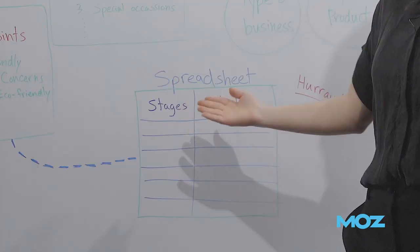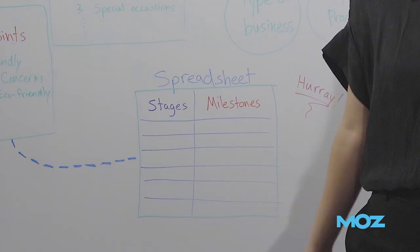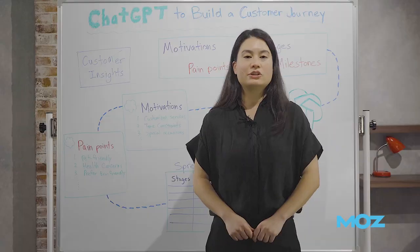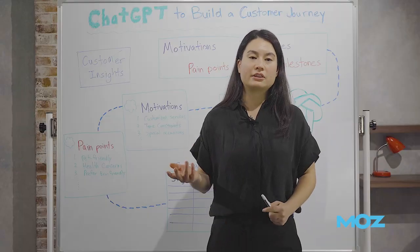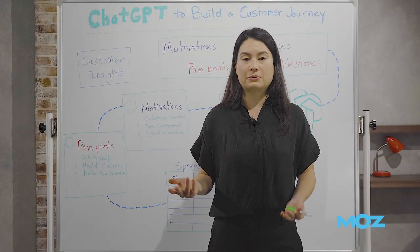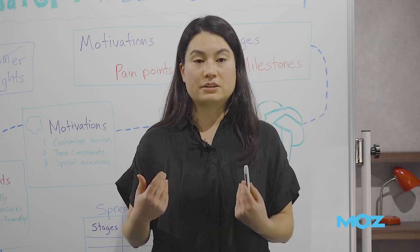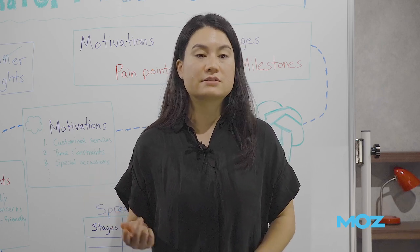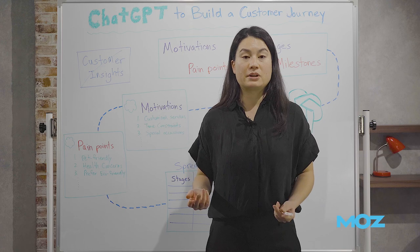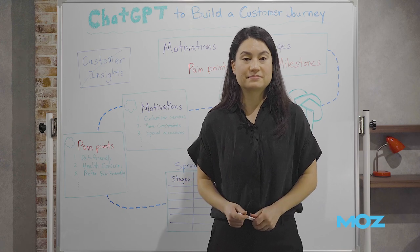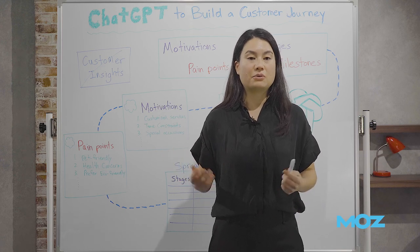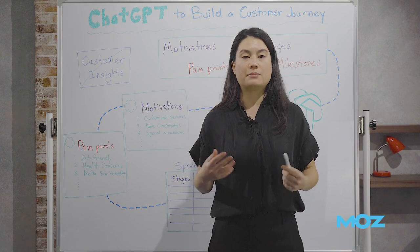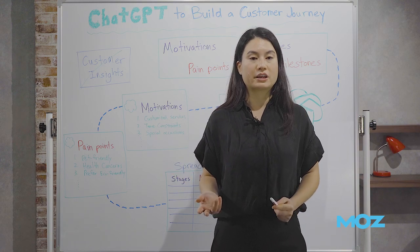The output will be a spreadsheet with a full user journey. Now let's start. Users search online for answers to solve their problems. What we want to know are users' motivations for searching and pain points while they're searching, and we want to know what these are at every stage and moment of the user journey.